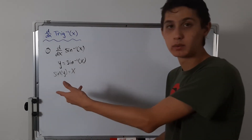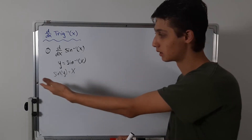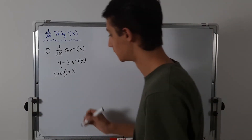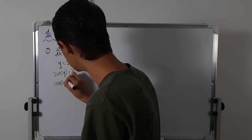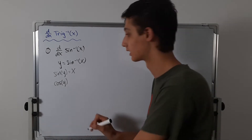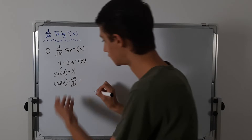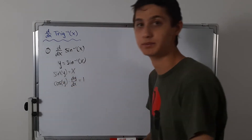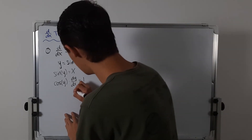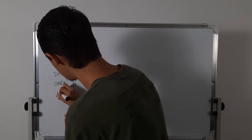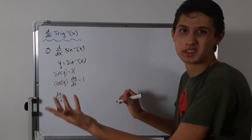Now we can differentiate both sides. We know the derivative of sine is cosine. So we have cosine of y times dy/dx, and this is equal to the derivative of x, which is 1. Now we can divide both sides by cosine of y. So we have dy/dx is equal to 1 over cosine of y, which is just secant of y. But I'm going to leave it as 1 over cosine, because that's going to help us the most.